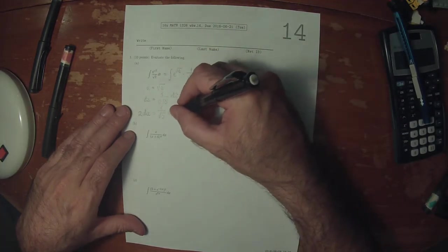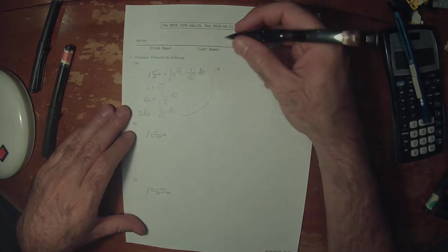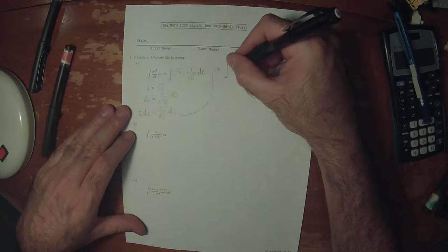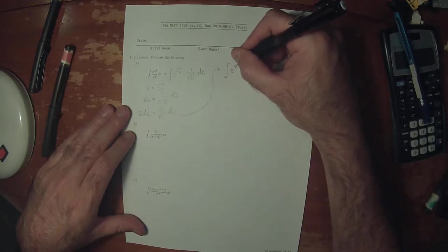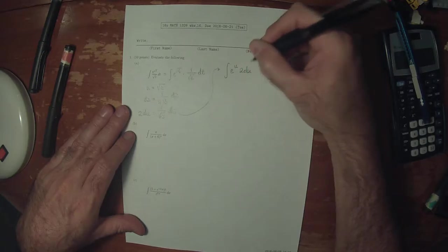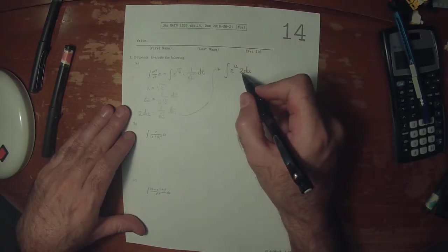So making that substitution, the antiderivative becomes e to u and then 2 du. And that 2 is just a constant, so it doesn't affect anything.